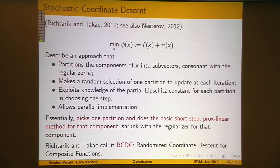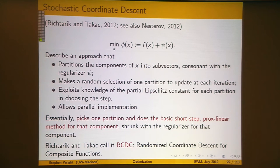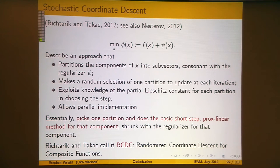I want to talk about a more specialized theory, referring in particular to recent work of Peter Richterich and Martin Takash, and also a recent paper of Yuri Nesterov, where they analyze this kind of method. I'll try to give you an almost complete convergence theory on a couple of slides — I will have to skip some details and the equations get a little complicated, but most of it will be on the slides.